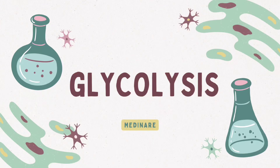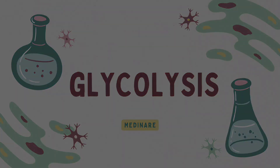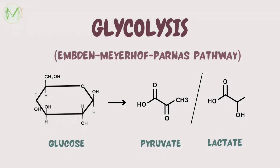Welcome back to Medineer. In this video, let's discuss glycolysis. It is also known as the Meyerhoff partner's pathway. It is the principal route of carbohydrate metabolism. Glycolysis basically refers to a process where glucose is converted to pyruvate or lactate.